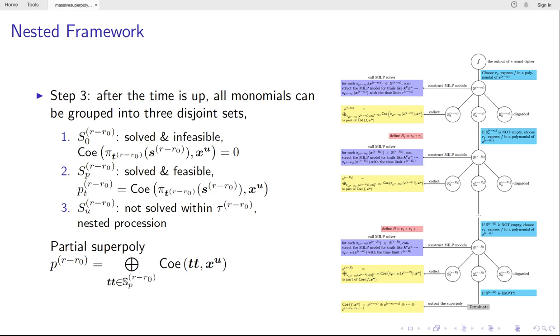In the last case, the MILP model cannot be determined feasible or infeasible. Then, we have to expand every monomial to next deeper round states. And we repeat this process.